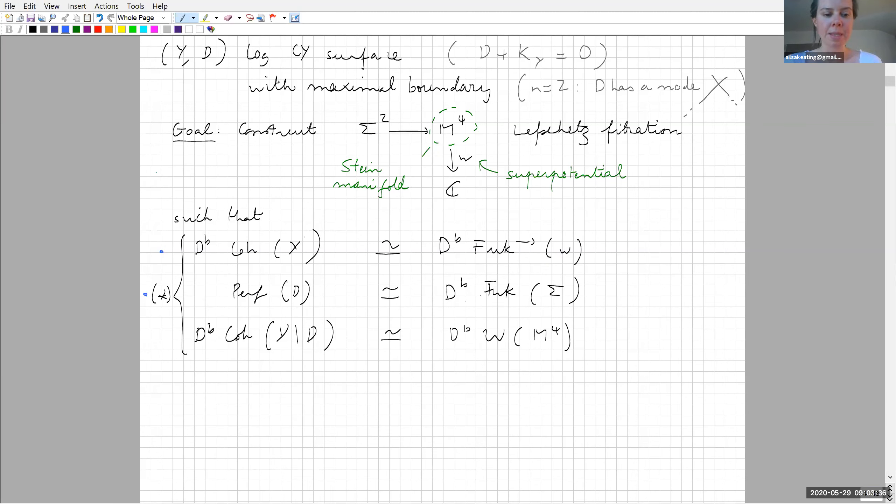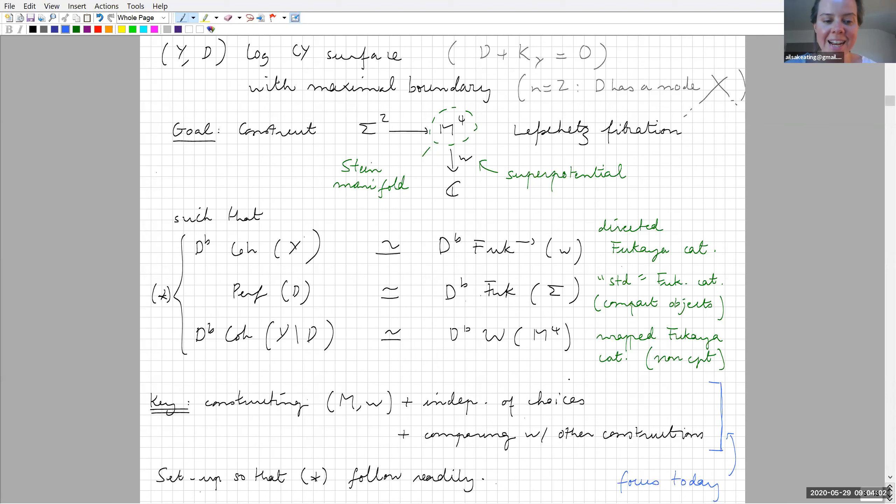I've annotated here: directed Fukaya category, the standard Fukaya category of the fiber, and the wrapped Fukaya category including some non-compact Lagrangians. It's going to sound like the key in this story isn't actually proving these statements, it's getting the right space and setup so that the statements fall out using heavy machinery, mostly developed in Seidel's series of papers about A-infinity structures associated with Lefschetz fibrations, and localization results due to Abouzaid and Seidel.